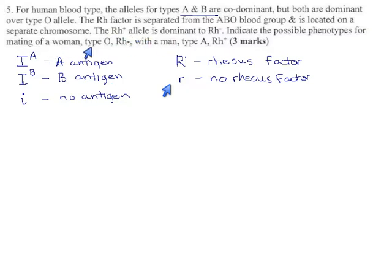So, indicate the possible phenotypes for mating of a woman who is blood type O and Rh negative with a man who is type A and Rh positive. The woman is easy to deal with here because she has a nice phenotype. Blood type O is only possible one way. You have to be little i, little i, and Rh negative means you must be little r, little r. So she's as recessive as possible, and she's also going to have very nice predictable gametes. All of her eggs will have to contain a little i, because that's all she has, and a little r, because that's all she has.